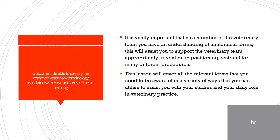For outcome 1, it's important that you are able to identify the common veterinary terminology associated with basic anatomy of the cat and dog. It's vitally important as a member of the veterinary team that you have an understanding of these terms, and that in turn will help you to assist and support the veterinary team appropriately in matters such as positioning, restraint, and that will apply to many different procedures.